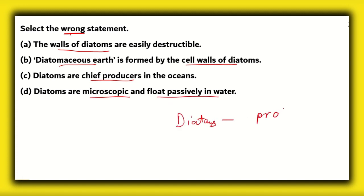Well, number one, they belong to the kingdom Protista. So, Protista contains mostly unicellular organisms which are eukaryotic. So, that means option D, diatoms are microscopic and float passively in the water, is true. So, that makes this option incorrect. Another thing that we know about diatoms is that they are chief producers. They are present in the ocean and they are producers in the ocean. So, therefore, option C is also true, which makes the option incorrect.